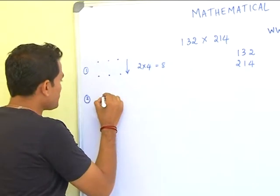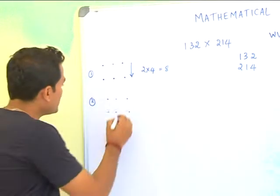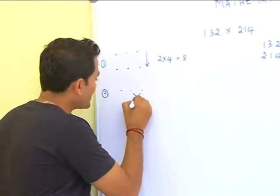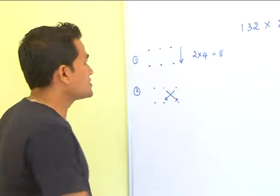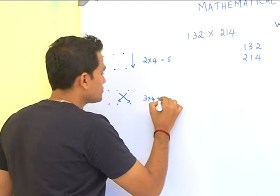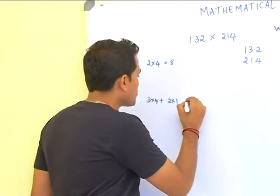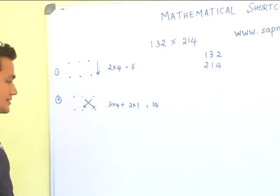So, the second step. Second step would be to do criss-cross multiplication with the last 2 digits. So that is 3 into 4 and 2 into 1. So that is 12 plus 2 which is 14.